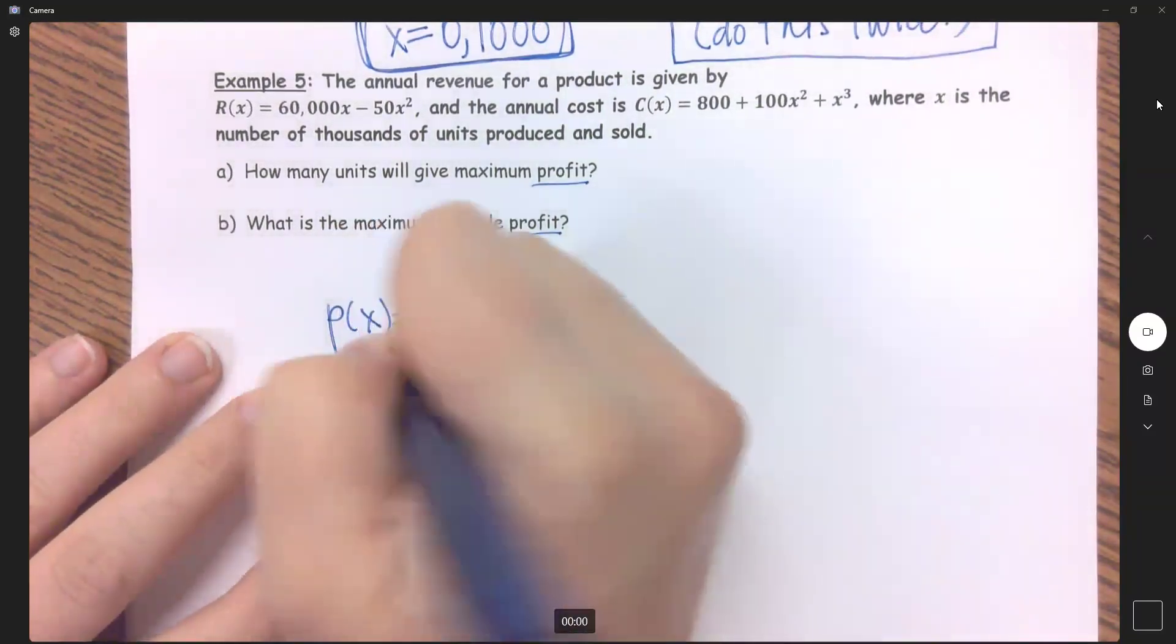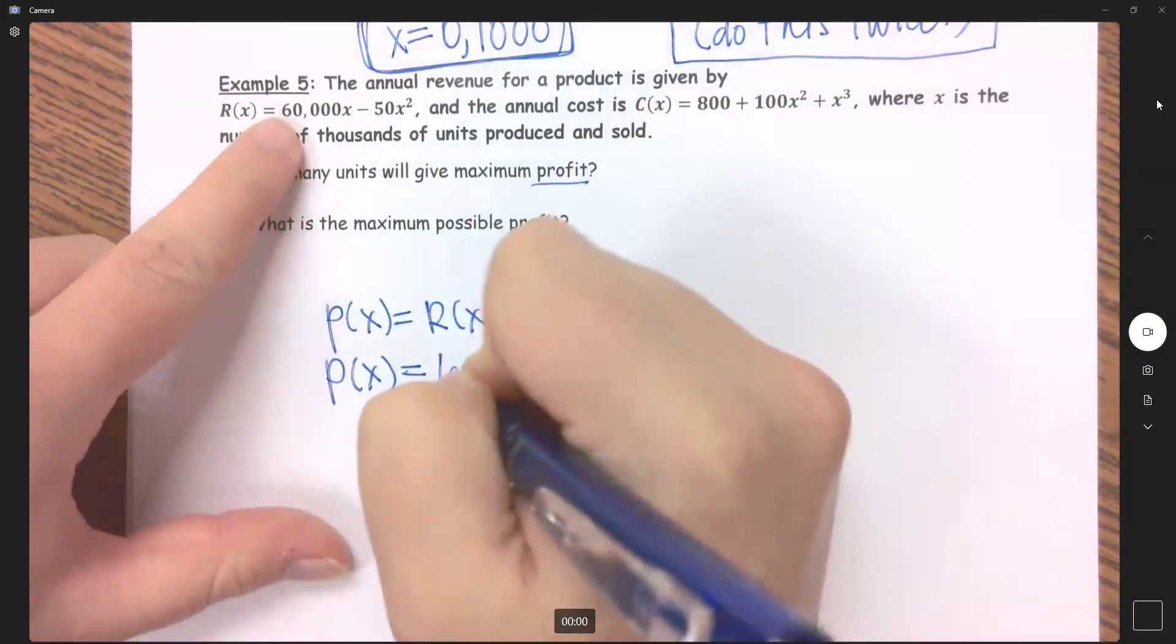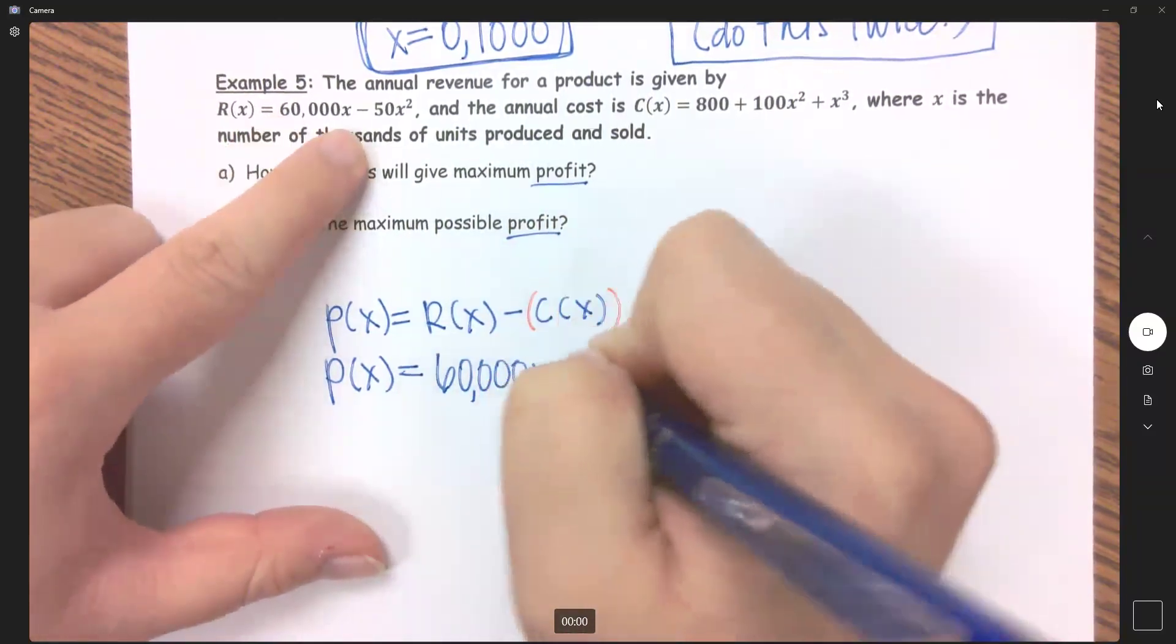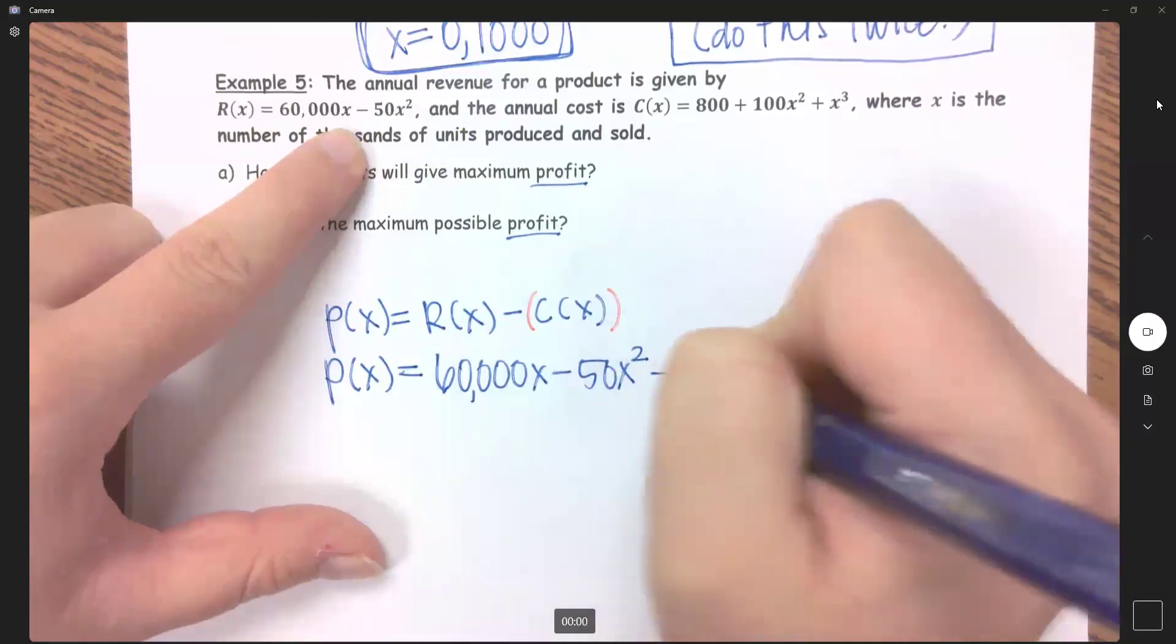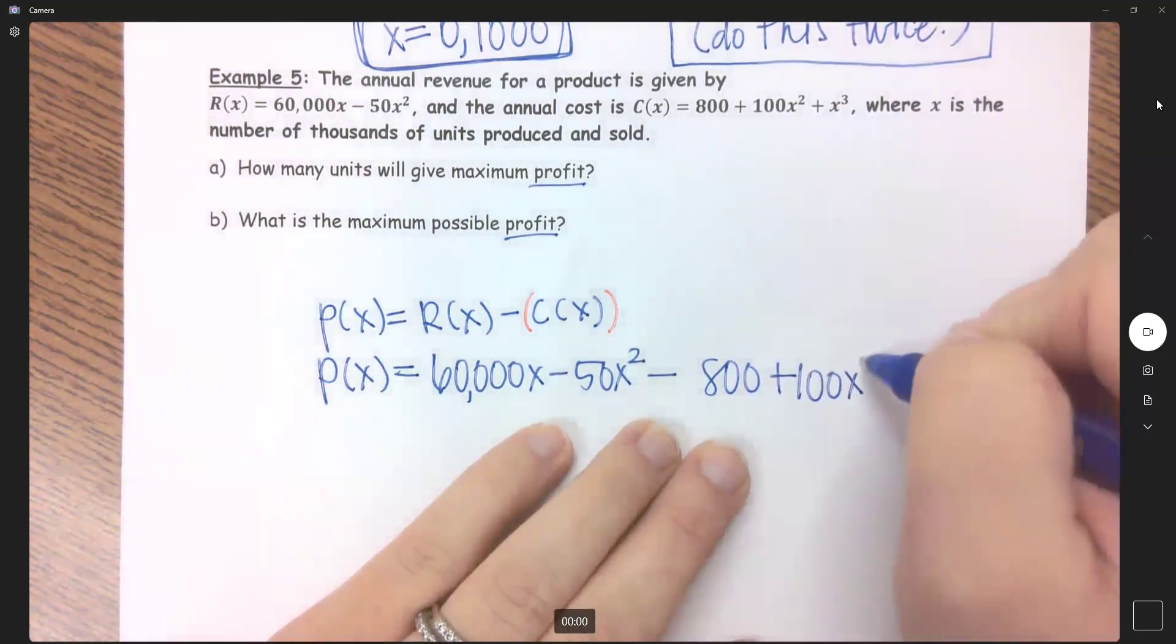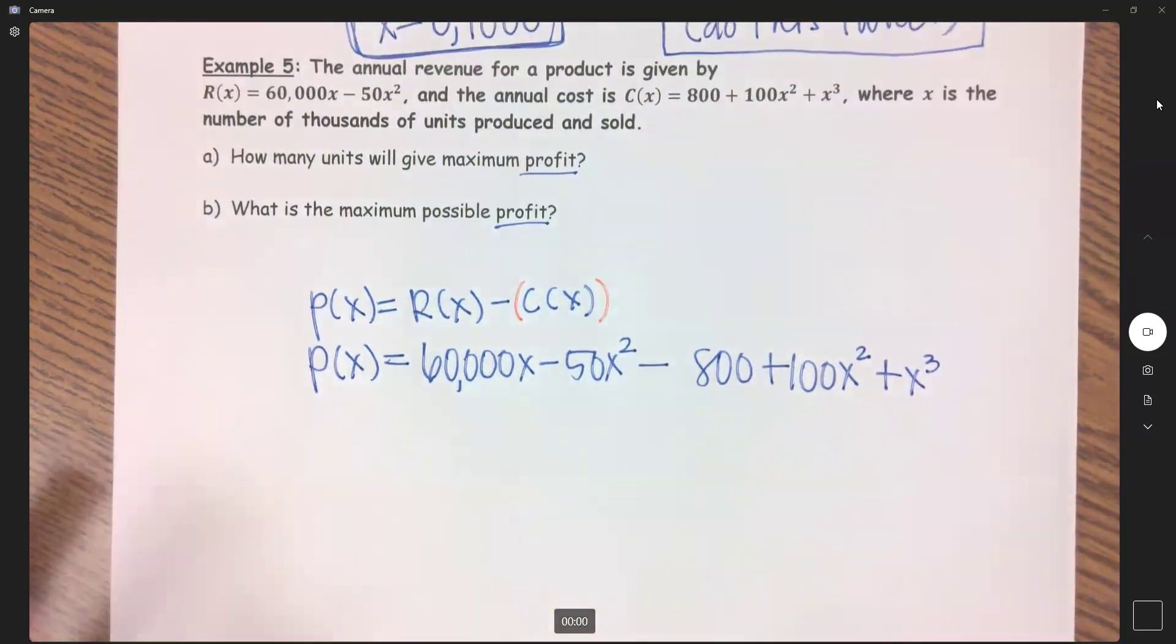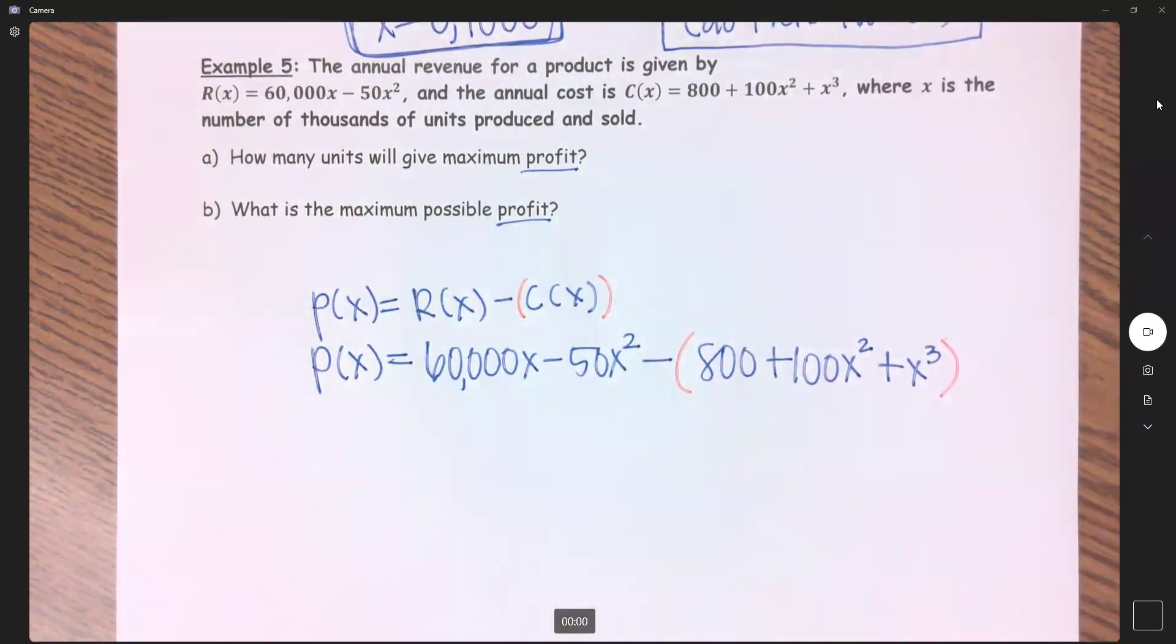So therefore my profit equals my revenue minus my cost here. Now if I don't put those parentheses, the only thing I'm subtracting is that 800 from that cost, but I want to subtract all of it.